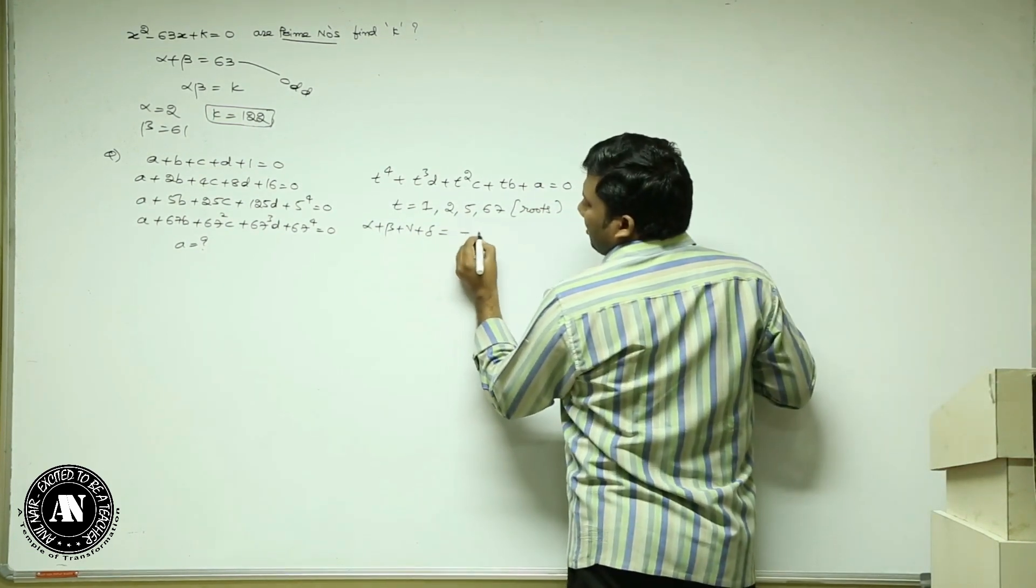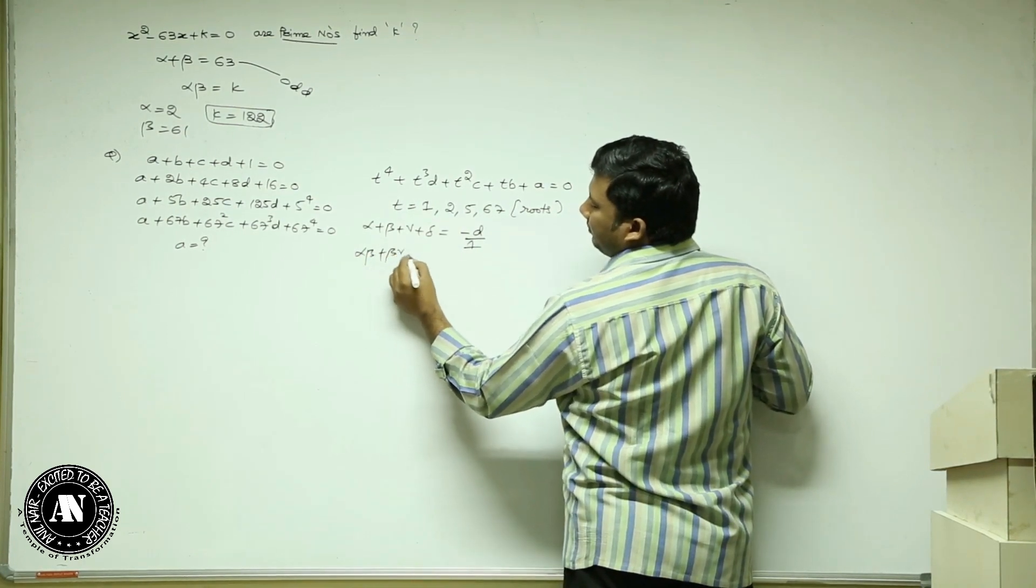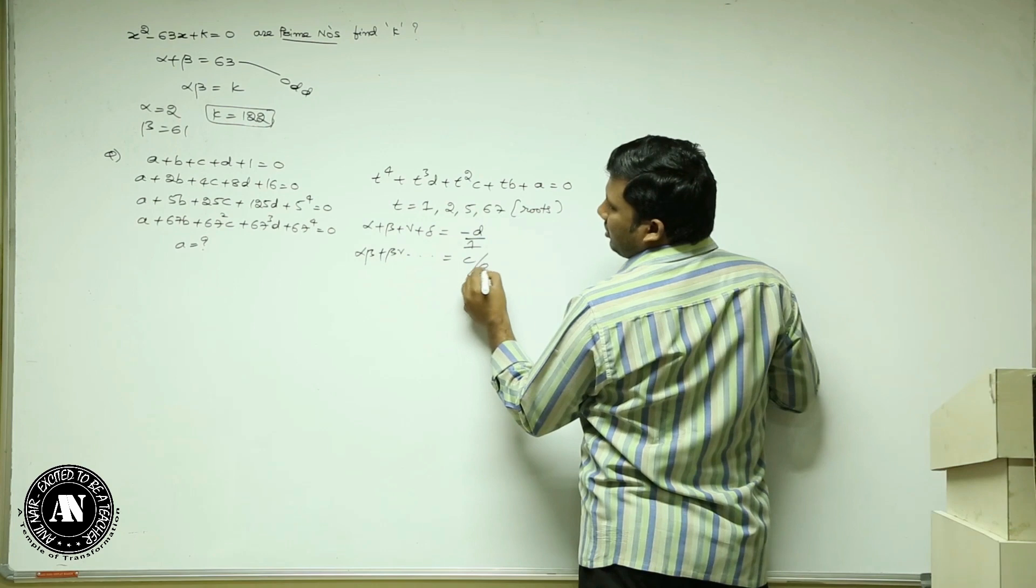It is minus B. What is sum of the roots taken two at a time? It is C by 1.